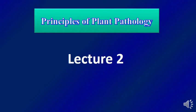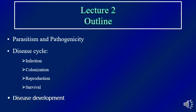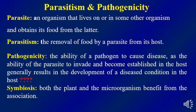Hello everyone, welcome to the second lecture in the principles of plant pathology. Today we will talk about parasitism and pathogenicity, the steps of the disease cycle including infection, colonization, reproduction, and survival, and some points about disease development. We will begin with some key definitions.